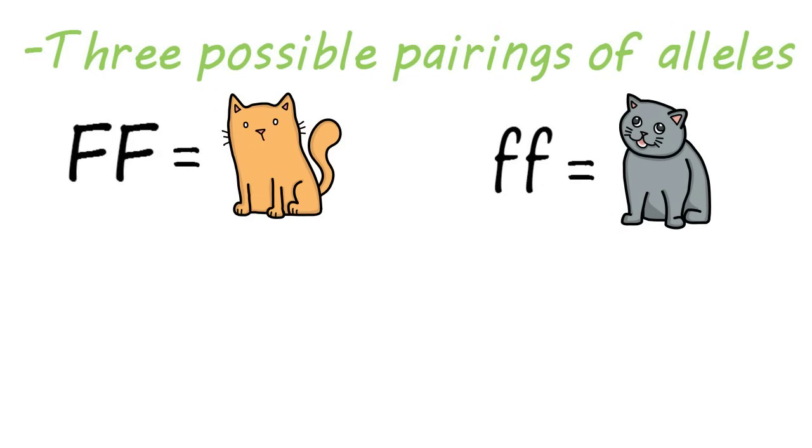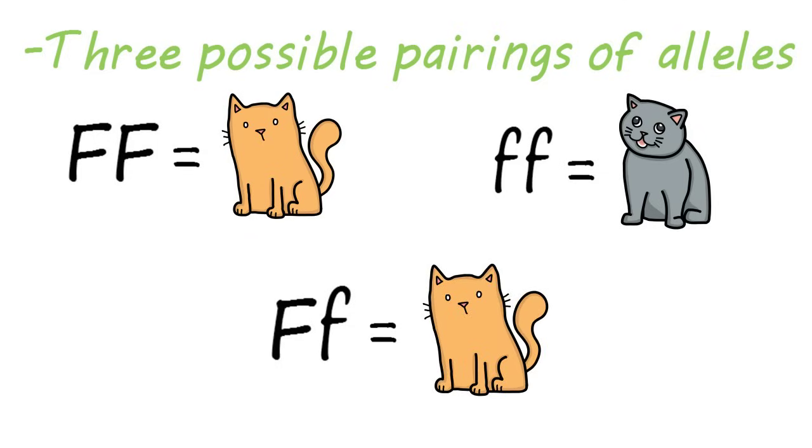Or you could have one of each, a big F and a little f. The order doesn't matter here when there's one of each. In this last case, the fur would be orange, because the dominant trait is always expressed over the recessive in this type.